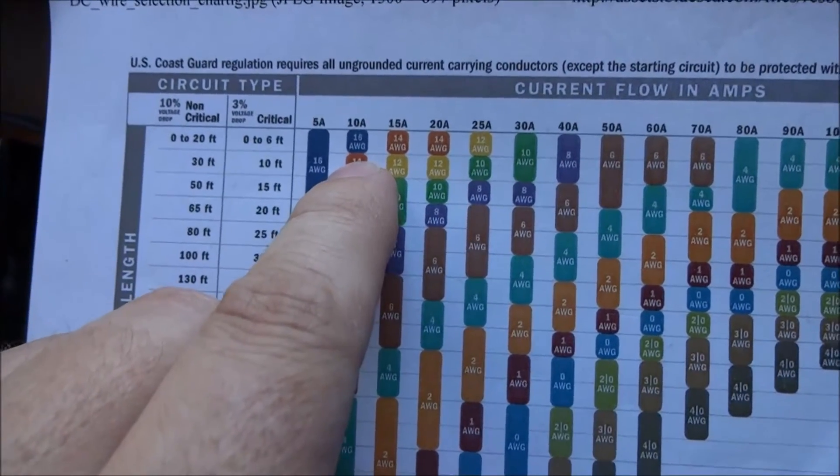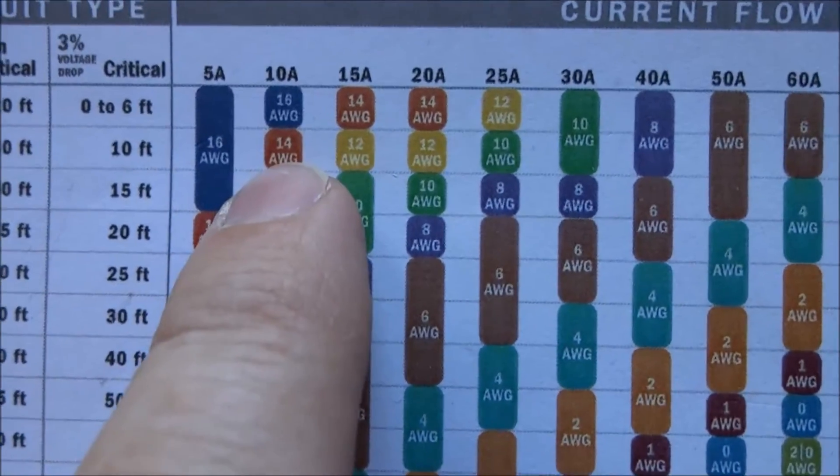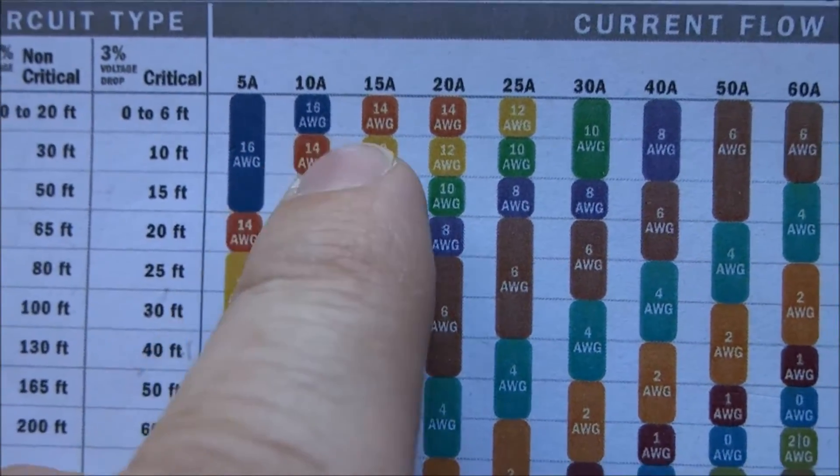I have two cells in parallel, which gives me a maximum of 10 amps. This chart tells me all I really need is 16 gauge, so 14 gauge is more than sufficient.